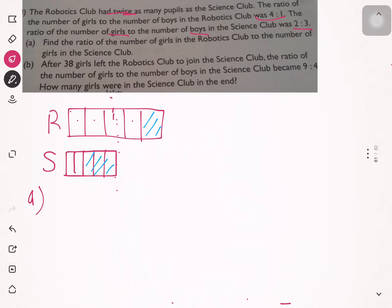Science club has two units, so you might think it is 4:2 — but that is not correct. Because the robotics club has twice as many pupils as the science club, one unit of the robotics club equals two units of the science club. So the ratio of girls is four units to one unit, which simplifies to 4:1.